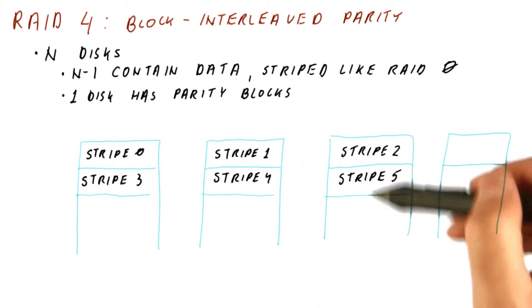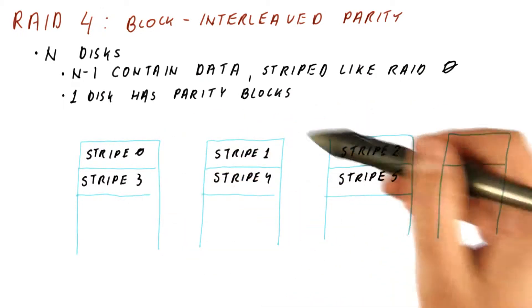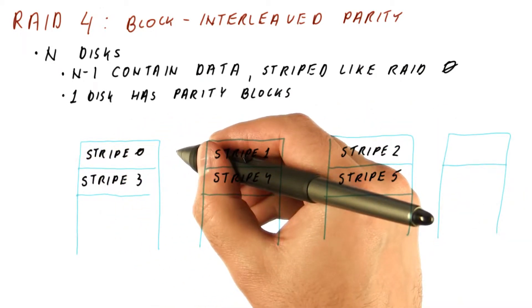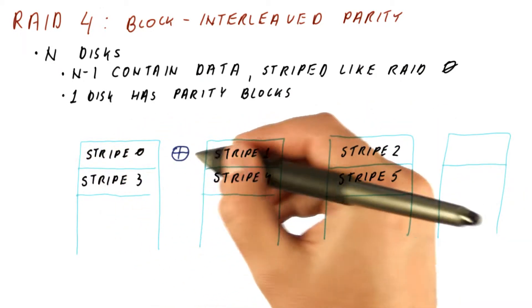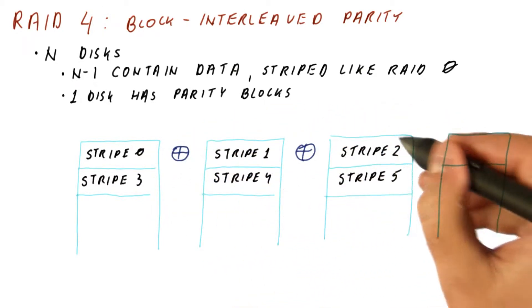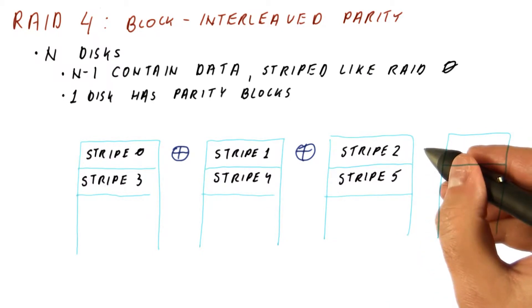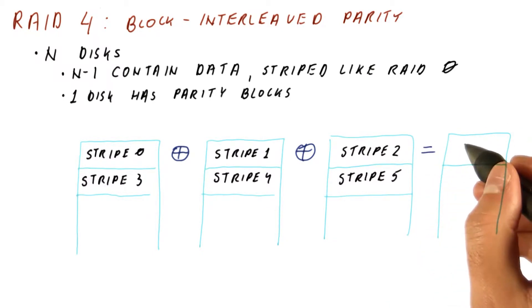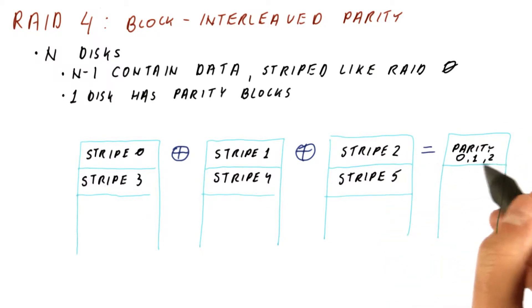So we just distribute our data across all but one disk. And then we take the data of stripe 0, XOR the whole stripe bit by bit with stripe 1, XOR the whole thing with stripe 2. And what we get will be as long as a stripe. And that gives us the parity stripe for 0, 1, and 2.